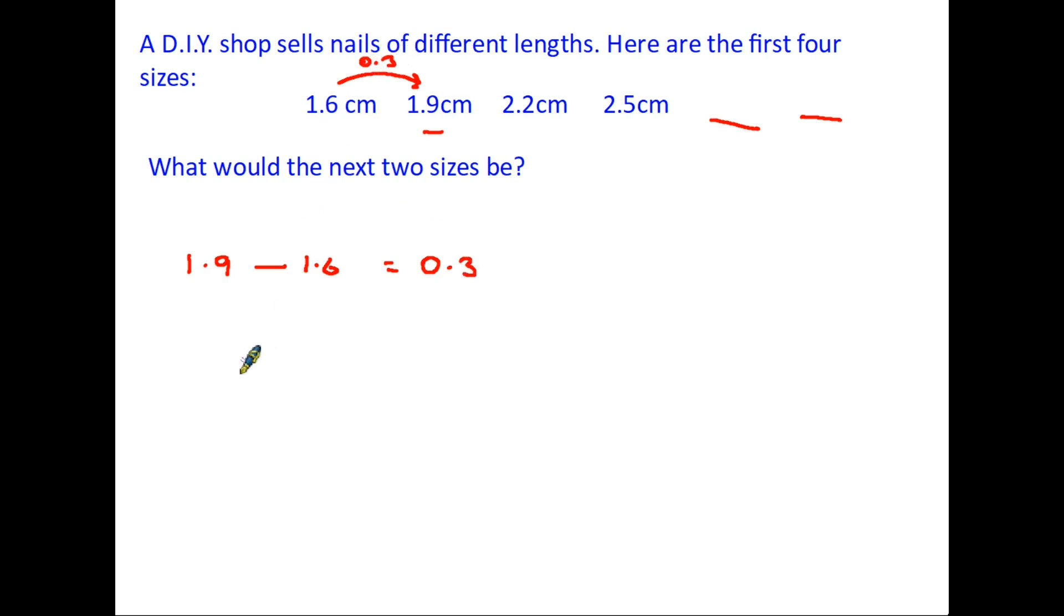Now of course we need to make sure that's a pattern so let's have a look at the second two numbers, we have 2.2 and if we take away 1.9 it equals 0.3. Also for the last two, 2.5 minus 2.2 is 0.3, therefore we have established that the rule in this pattern is plus 0.3.